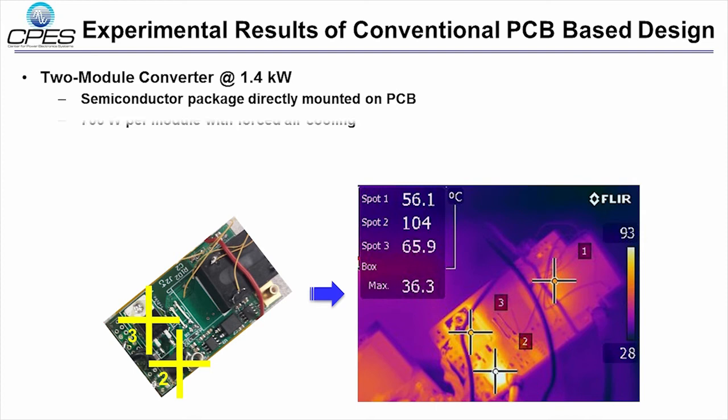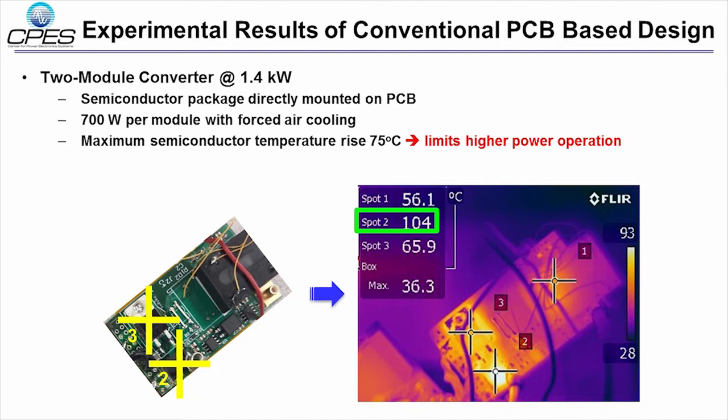According to span number 2, the temperature rise of the gallium nitride device is 75 degrees C, assuming that the room temperature is around 30 degrees C. This is beyond our requirements, so there is a technique to reduce the temperature rise of the semiconductor devices.